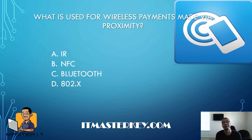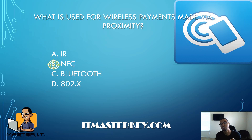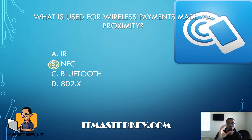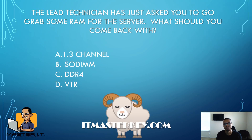What is used for wireless payments made by proximity? Easy — NFC, another acronym, which stands for near field communications. That's something you use to wirelessly pay for something via proximity — you hold your phone close to the reader and it takes the payment.